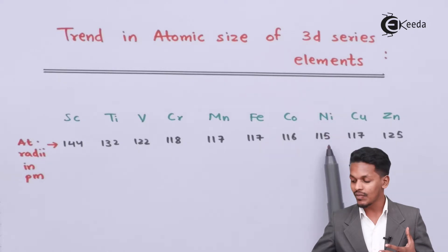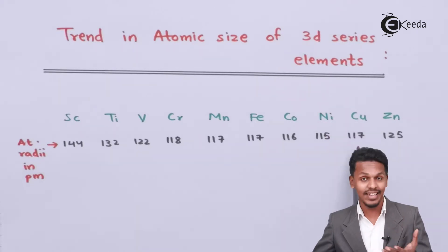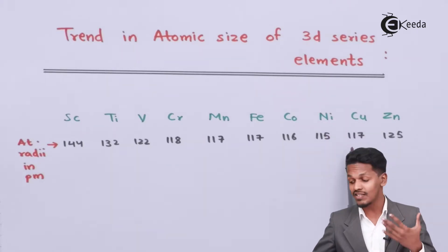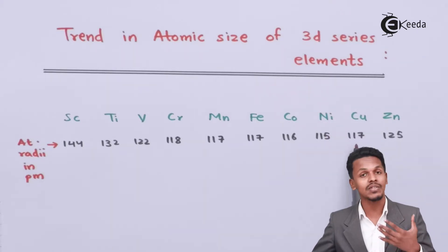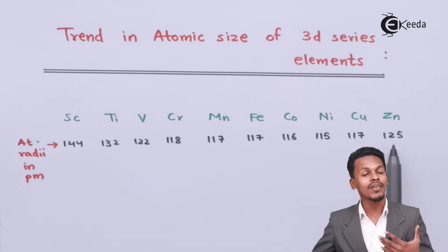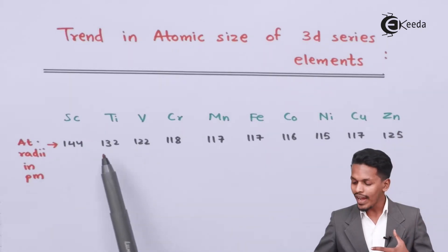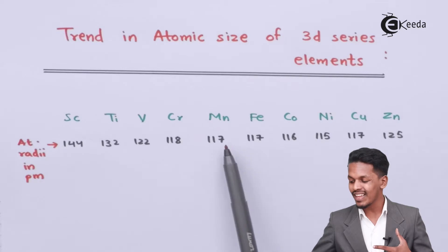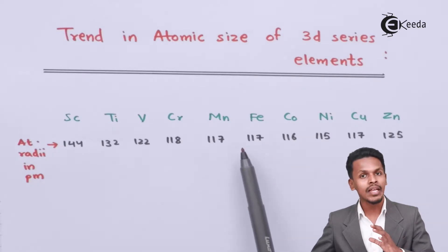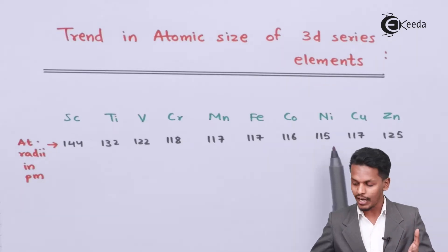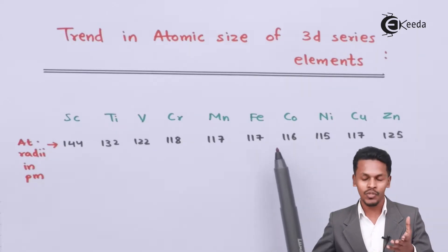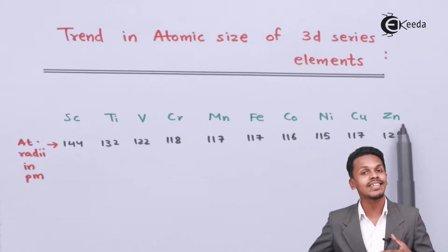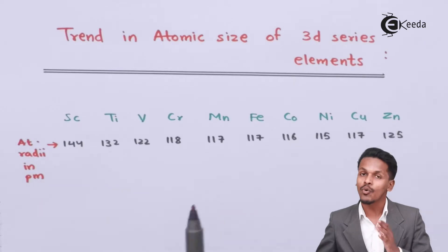Cobalt is 116 pm, nickel is 115 pm, but for copper the size is increasing to 117 pm, and for zinc it is 125 pm. So why is there a decrease initially, then an almost unchanged atomic size in the middle, and then an increase toward the end? This is what we are going to explain.